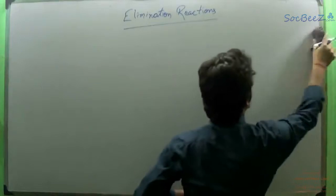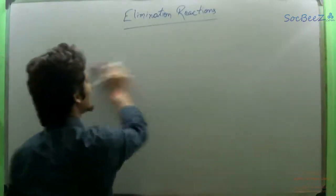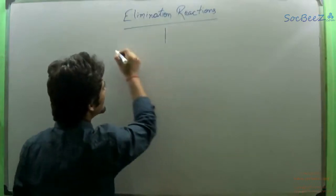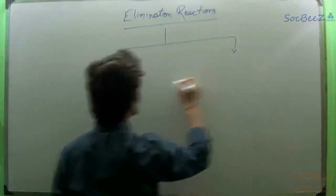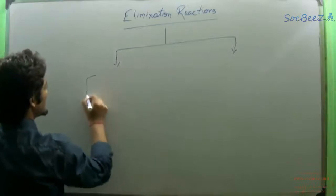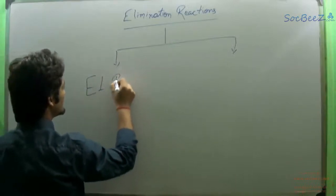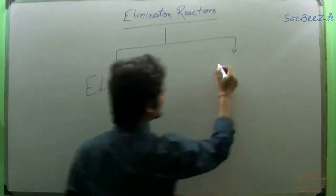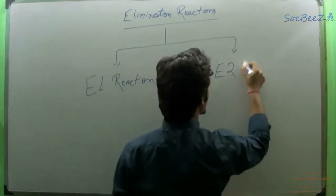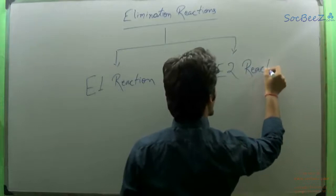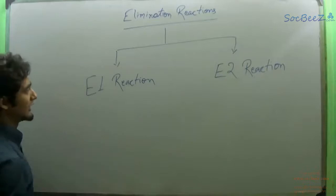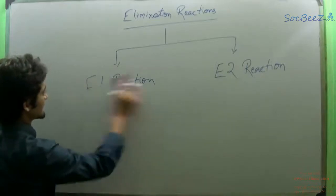These elimination reactions are mechanistically divided into two subgroups known as E1 reaction and E2 reaction. We will be discussing both of these mechanisms in detail. Let's start with the E1 reaction.